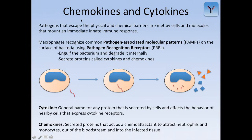Let's begin with chemokines and cytokines. Pathogens that escape the physical and chemical barriers are met by cells and molecules that mount an immediate innate immune response — this is the innate immune response that is triggered first upon pathogen invasion. Macrophages recognize common pathogen-associated molecular patterns, or PAMPs, on the surface of bacteria using pathogen recognition receptors, or PRRs.